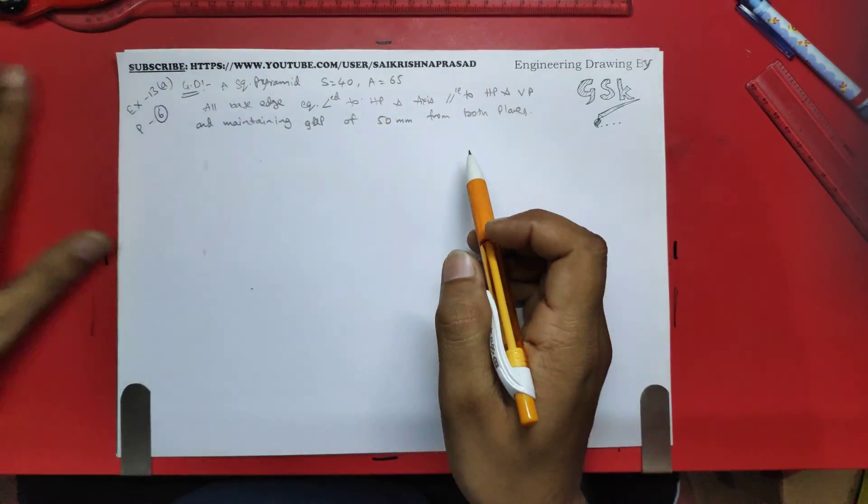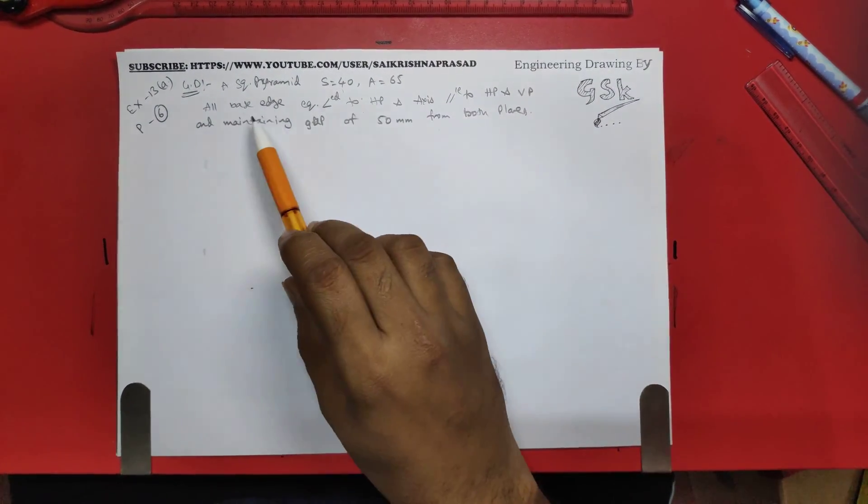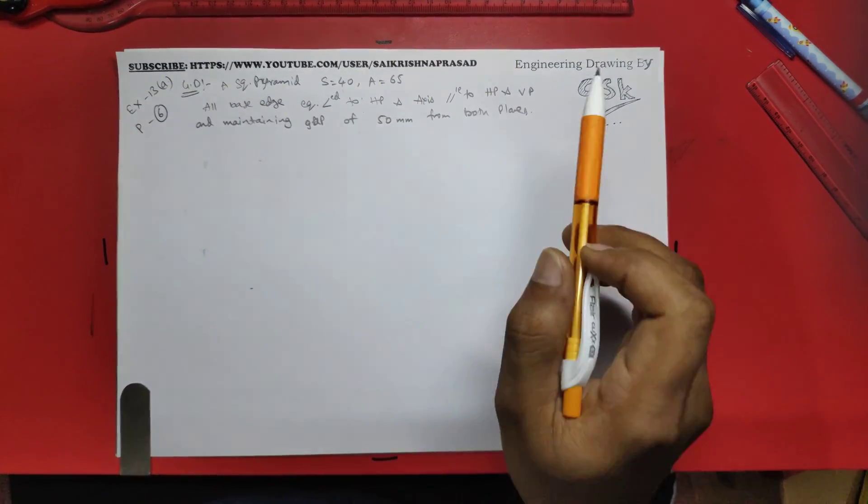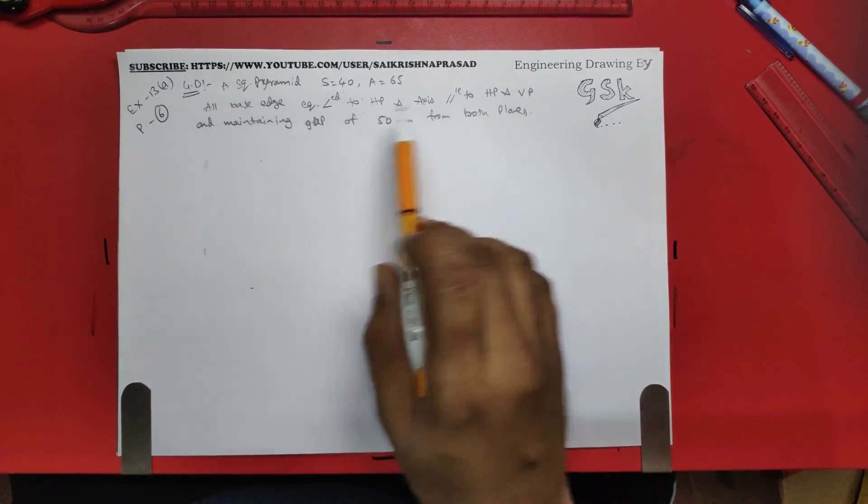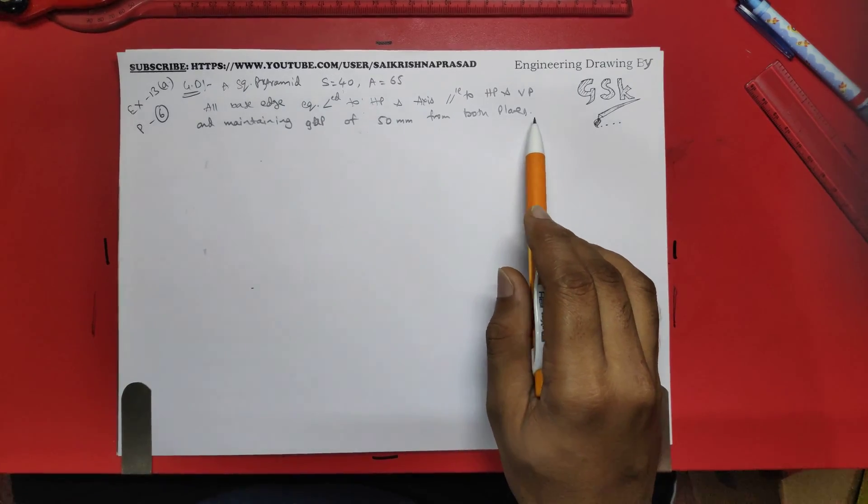Here I have extracted the given data from the question. The square pyramid side 40 and axis 65. All the base edges equally inclined to HP and VP, and your axis parallel to HP and VP and maintaining a gap of 50mm from both planes. So let's start the problem.